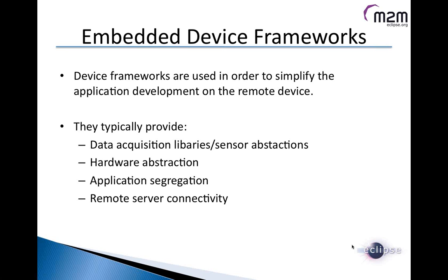Now we need to develop the application on the embedded device. What helps a lot is the use of device frameworks, which simplify application development on the embedded or remote device. The embedded device framework typically provides four categories of abstraction: one to help acquire information from the field or from sensors, one to abstract the hardware, one providing application segregation, and one to provide remote connectivity as a standard feature.